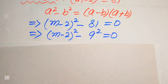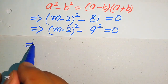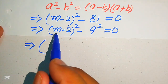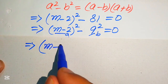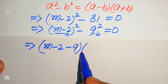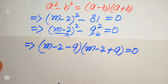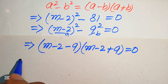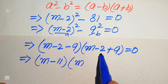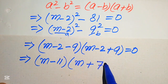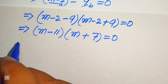We rewrite 81 as 9 squared, so the equation becomes (m minus 2) squared minus 9 squared equals 0. Applying the difference of squares formula with a equals (m minus 2) and b equals 9, we get (m minus 2 minus 9)(m minus 2 plus 9) equals 0. Simplifying the factors: (m minus 11)(m plus 7) equals 0.